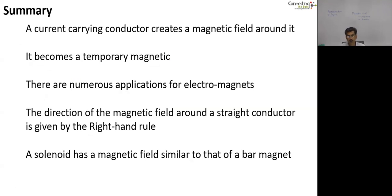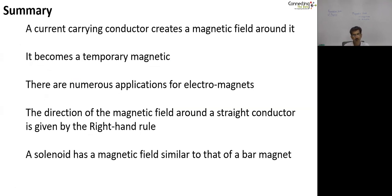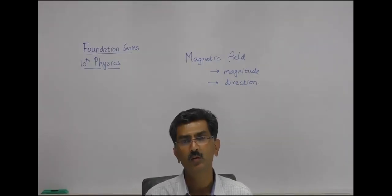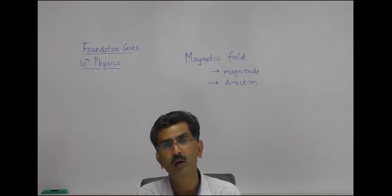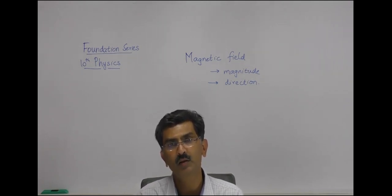Let's quickly summarize what we have studied. We first saw through simple demonstrations that a current-carrying conductor creates a magnetic field around it — it was a temporary magnet with north and south poles. We discussed one application of an electromagnet and why it should be an electromagnet rather than a permanent magnet, as well as the numerous applications of electromagnets around us. We then discussed the direction of magnetic field lines for a straight wire or solenoid using the right hand thumb rule, and compared the magnetic field lines of a solenoid and a bar magnet — they are identical. So that ends our short video on electromagnetism. Watch for other videos where we will solve some complex concept application questions.